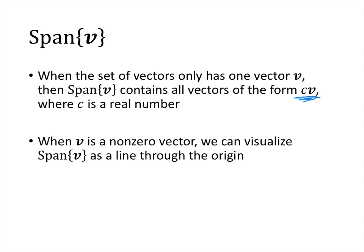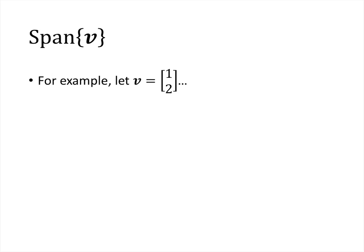Now when v is a non-zero vector, that span can be visualized as a line through the origin. So as an example, let's suppose that we had the vector 1, 2. So if this is the xy plane, then v itself is the vector 1, 2. So that's right around here, points from the origin to the point 1, 2.